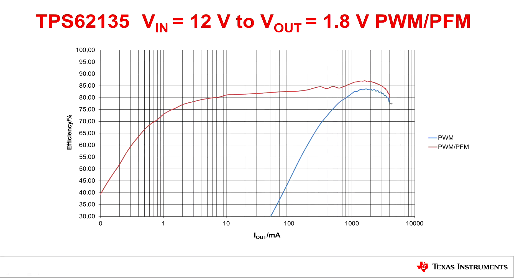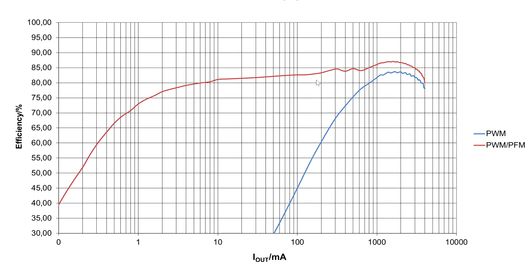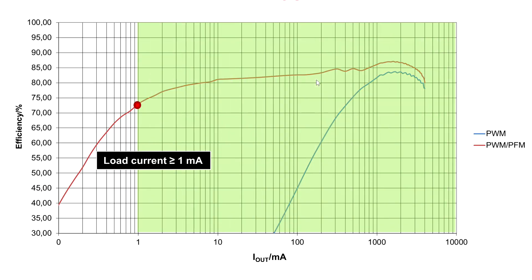The red curve shows the efficiency curve of the 62135 operating in pulse width modulation at heavy load. And once the load current gets reduced, we operate with pulse frequency modulation reducing the switching frequency. Now you can see that we operate at very high efficiency level, down to a load current of roughly 1 milliamp with an efficiency level of 73%.